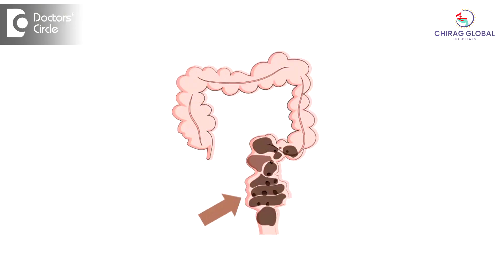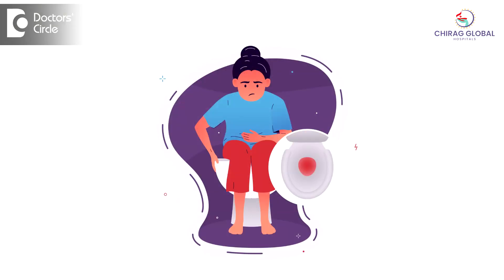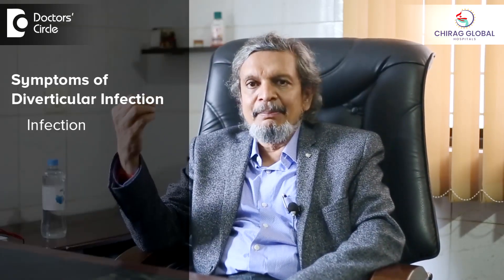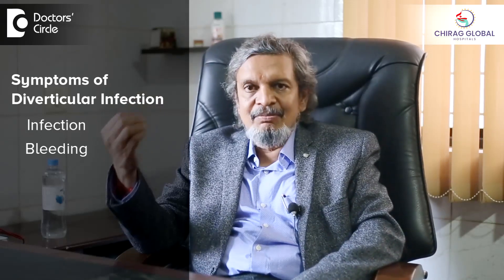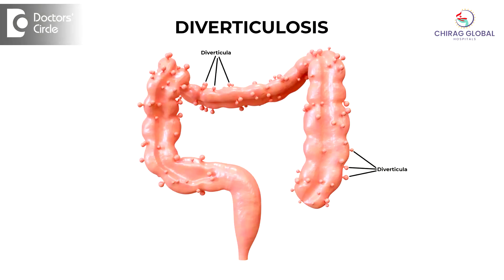Sometimes stool can enter and get fixed there, and they can get infected or may start bleeding — so certain complications can happen from diverticula. But not all diverticula need to be surgically treated unless they are causing symptoms. The symptoms being diverticulitis — when there is infection, repeated infection, we have to treat it. Or if there is a lot of bleeding, we may have to treat it surgically. So sigmoid colon is a part of the large intestine with its own peculiarities, but diverticula can happen in any part of the colon. When they cause issues, we treat them either medically or surgically.